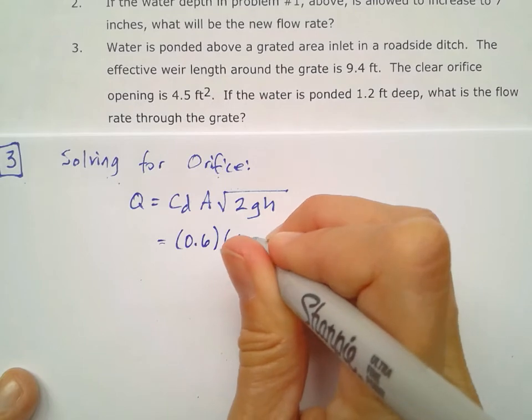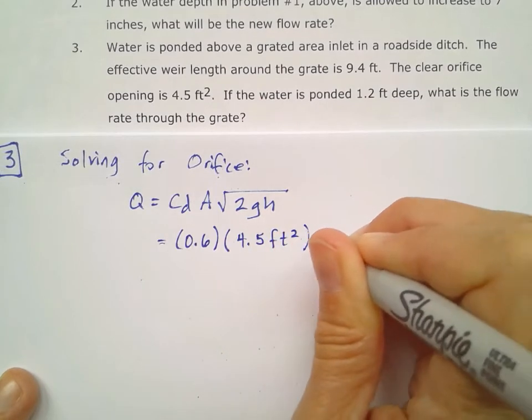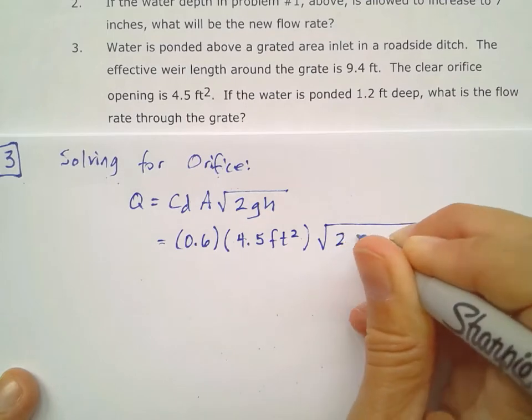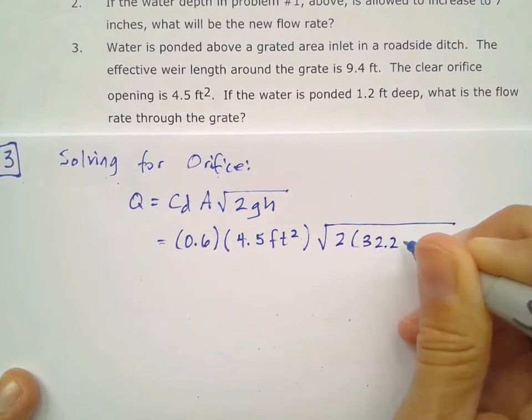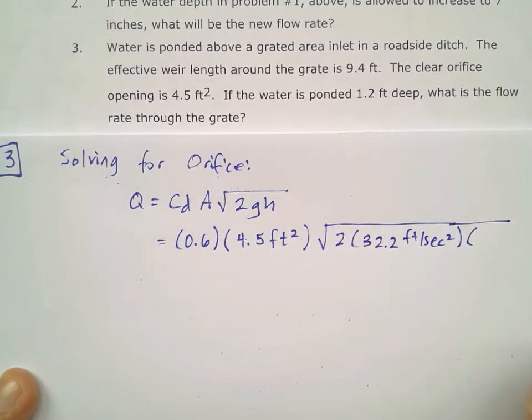The area I am told is 4.5 feet squared for the clear orifice opening. And then it's the square root of 2 times 32.2 feet per second squared, gravity times that H, which I'm going to assume is 1.2 feet.